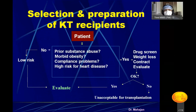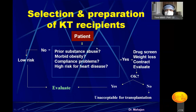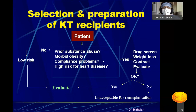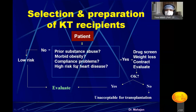We will first evaluate the kidney transplant recipient. When the patient comes to you, you have to check for prior substance abuse such as analgesic overuse, whether the patient is morbidly obese, and whether there is any compliance problem. Compliance is critical because immunosuppression will be required for the patient's whole life after kidney transplantation to prevent rejection.